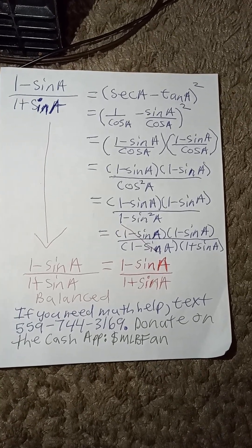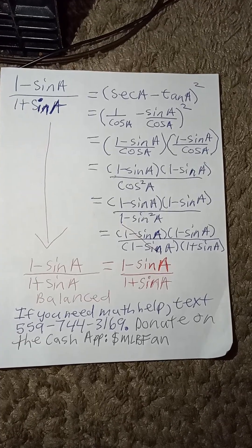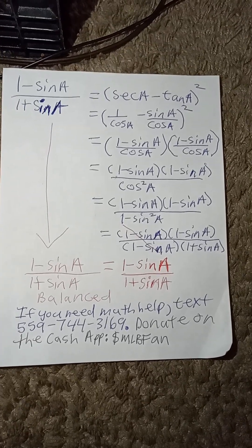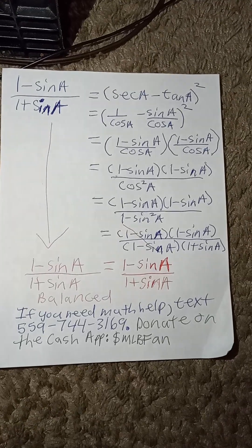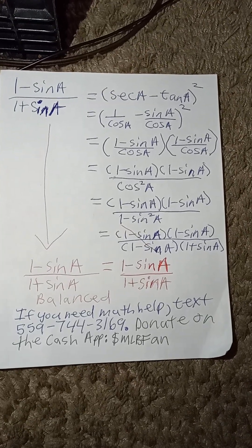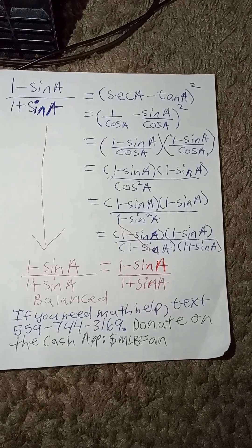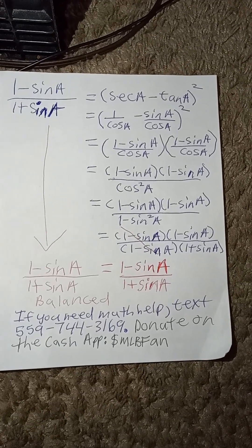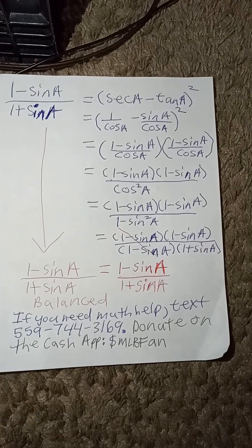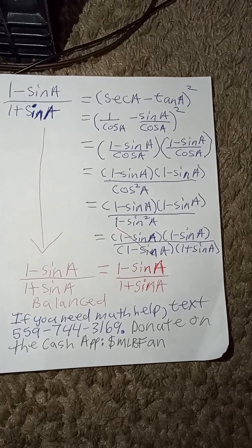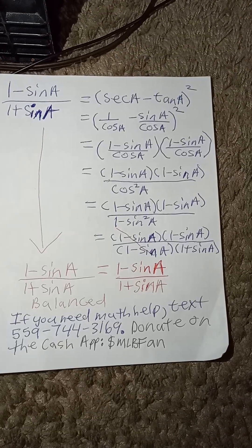And then we can bring it together as 1 minus sine a divided by cosine a. And remember it is to the power of 2, so it is 1 minus sine a divided by cosine a, times 1 minus sine a divided by cosine a. Then we bring it together and say 1 minus sine a times 1 minus sine a, divided by cosine squared of a.